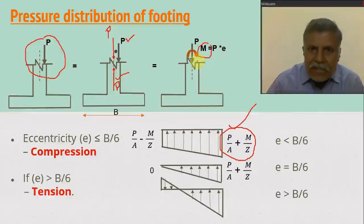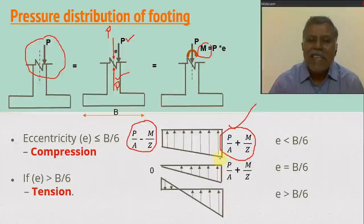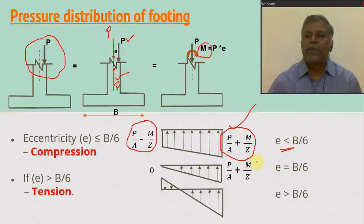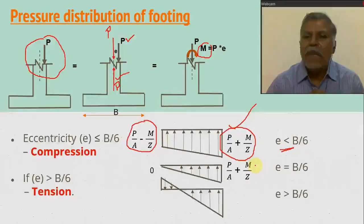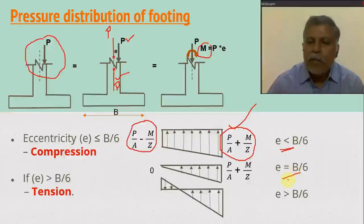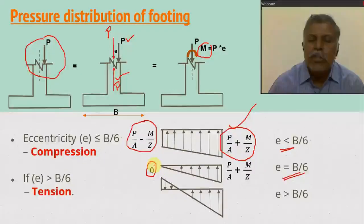You have a maximum pressure on one side and a minimum pressure of P/A minus M/Z on the other side. In this case, the pressure is non-uniform because of eccentricity. When eccentricity e is less than or equal to b/6, the whole base is under compression. If e equals b/6, the minimum pressure equals zero.